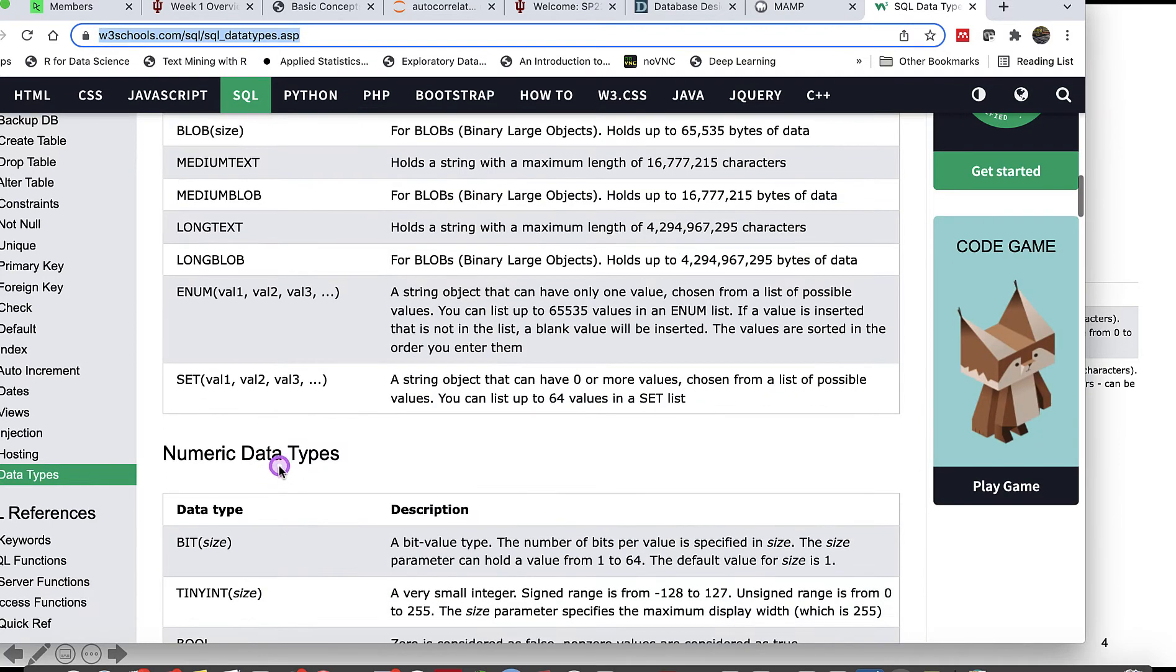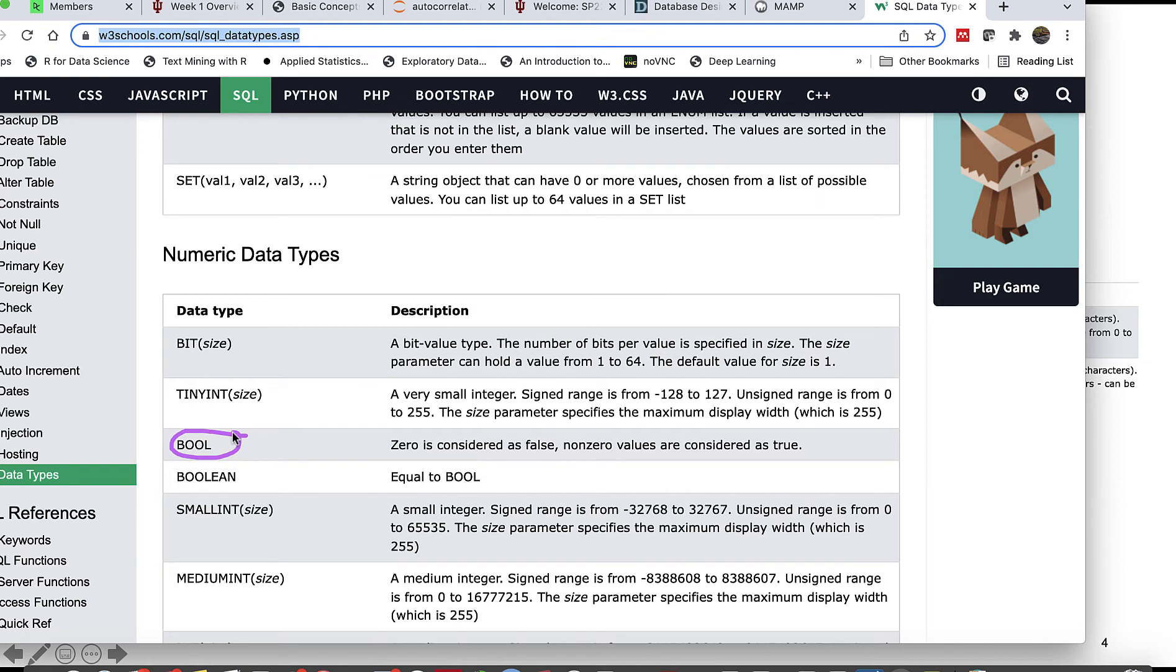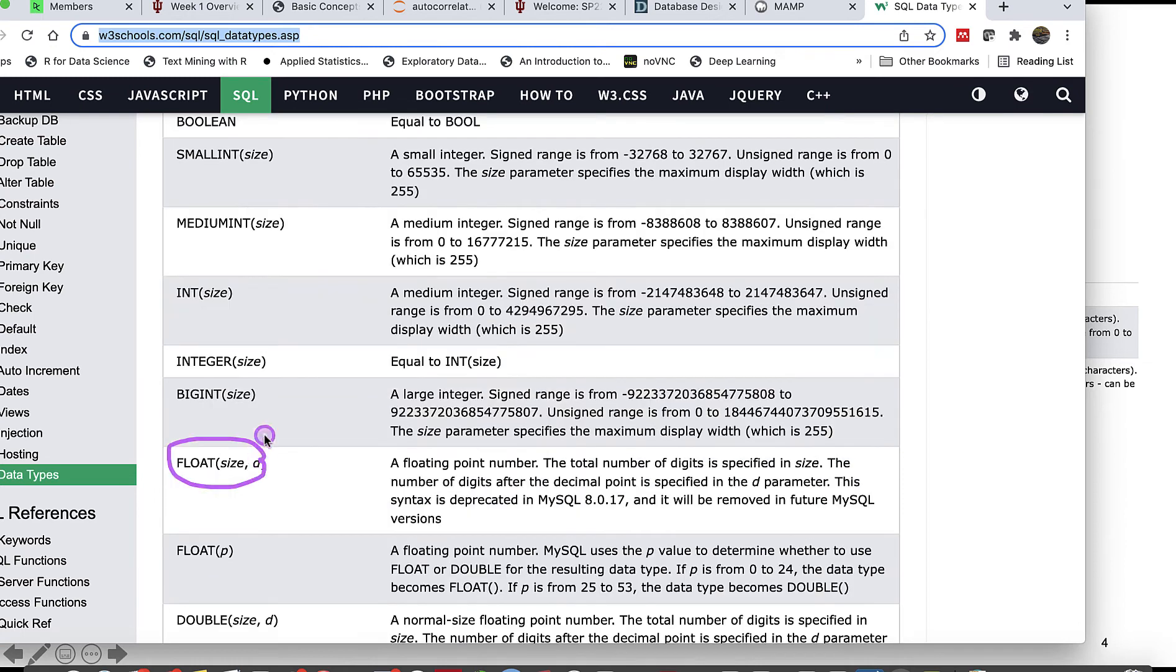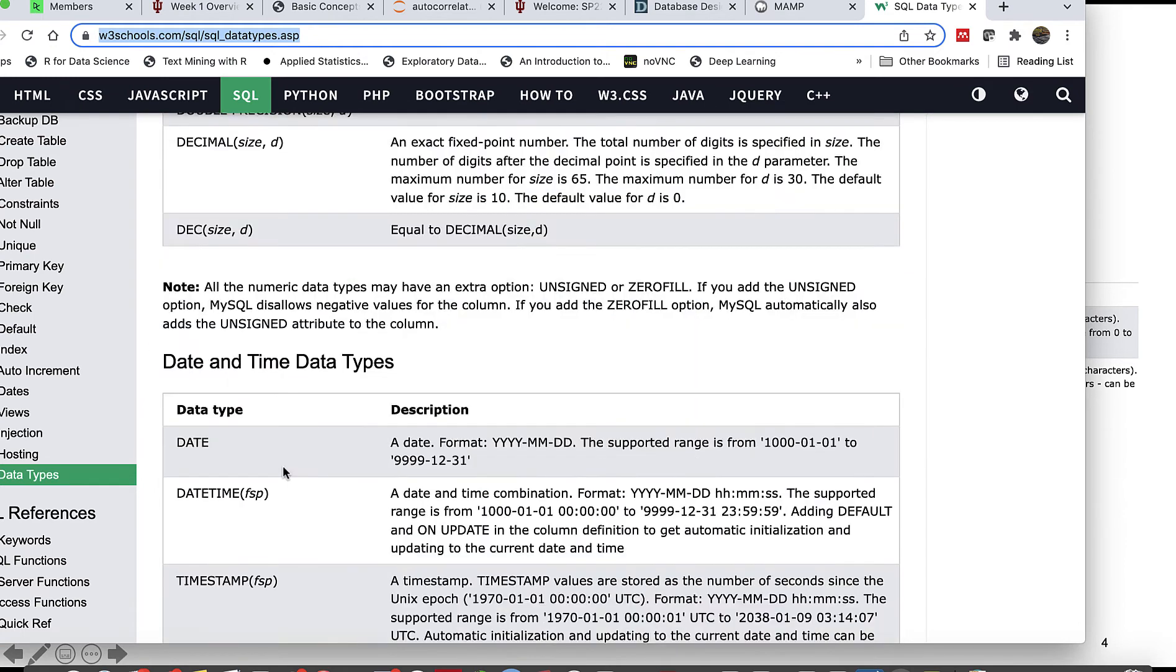In terms of numeric data types, one type is boolean where zero is considered as false and non-zero is considered as true. There's float, integer, and for date and time data types you have a variety of choices: year, different timestamps.